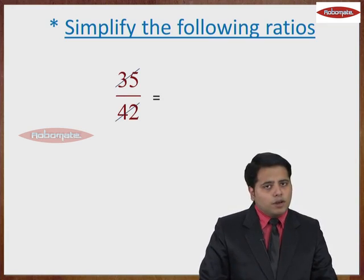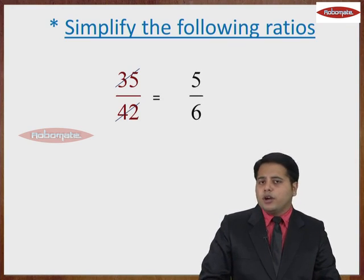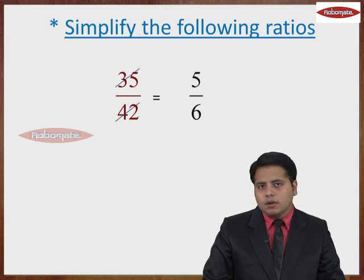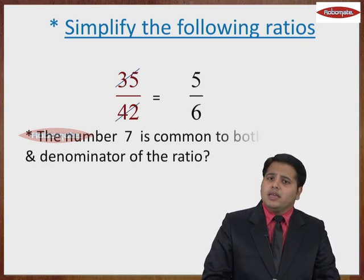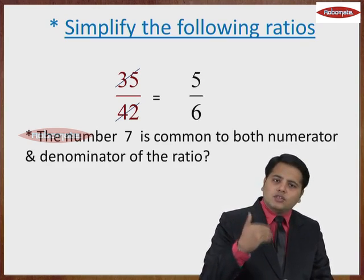Like 7, 5 would give you 35 in the numerator and 7, 6 would give you 42 in the denominator. So, students, do you agree that the number 7 was common to 35 as well as 42?